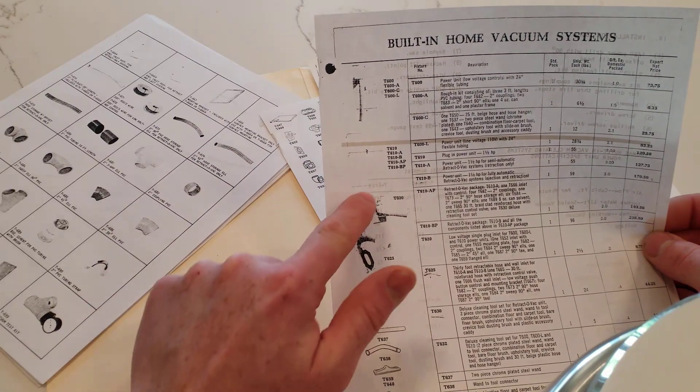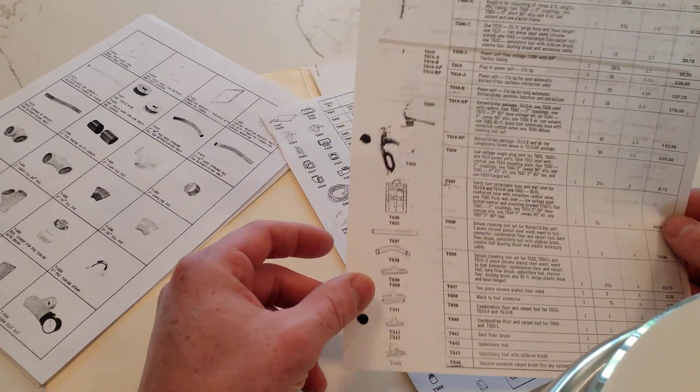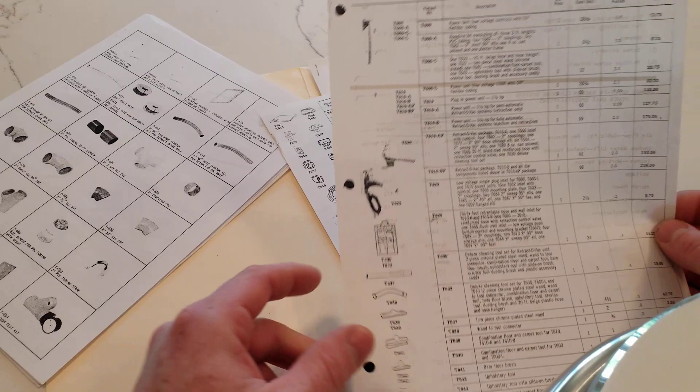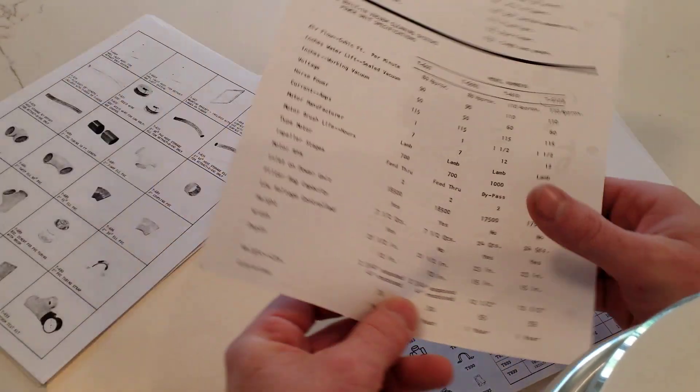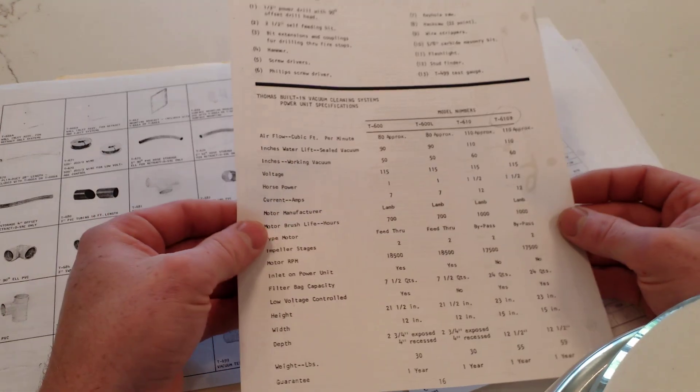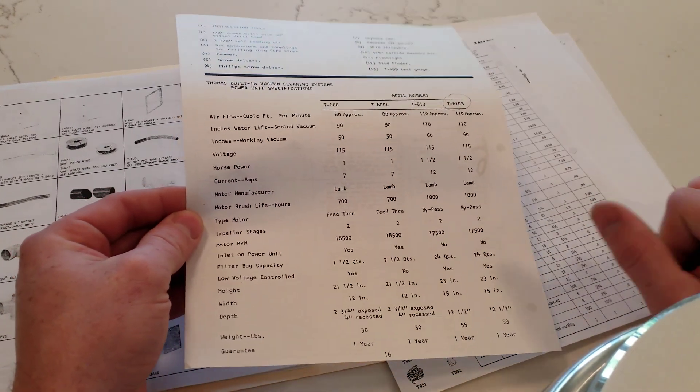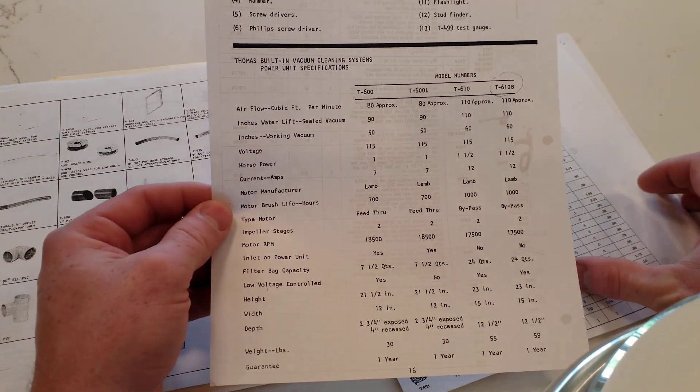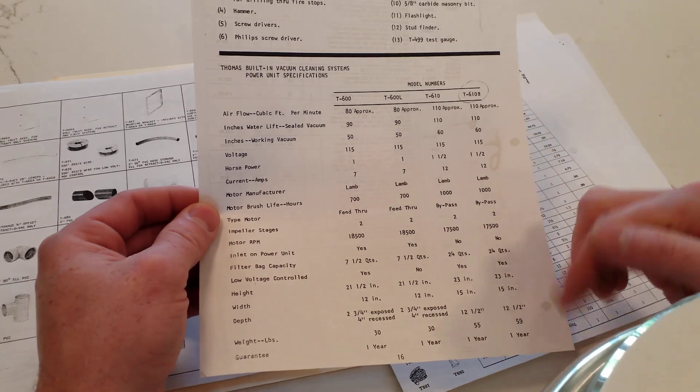And the pictures aren't very clear here, but you can see the plug-in type valve as well as the retractable type valve. And it looks like they were using Eureka tools. That's a Eureka rug tool and a Eureka floor brush. So according to Bill LaMonica of VacuLine, this literature came from somebody that still had this system in their house and in use working. And they had circled the T610B, which was the fully automatic retract and eject.